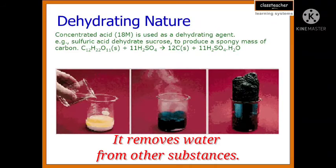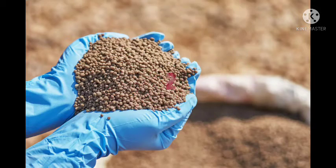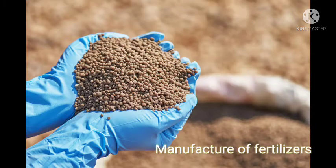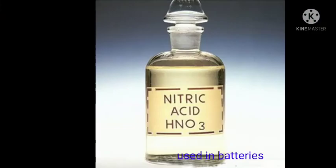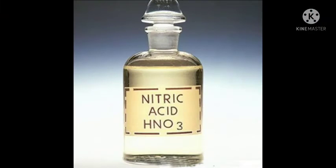First, sulfuric acid is used as a dehydrating agent. Second, it is used in the manufacture of fertilizers such as ammonium sulfate and super phosphates. Third, it is also used in cars and inverter batteries.